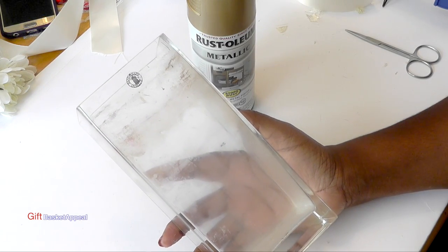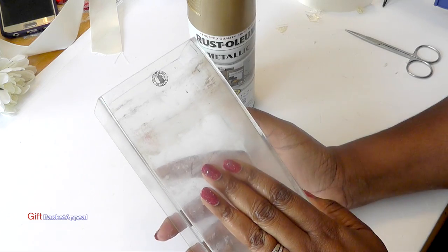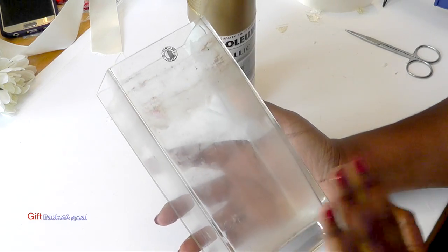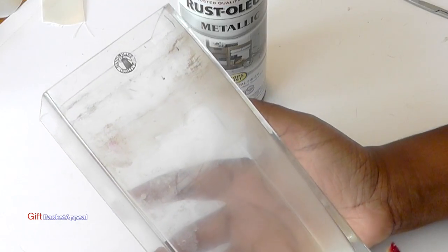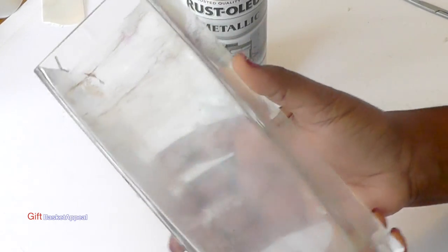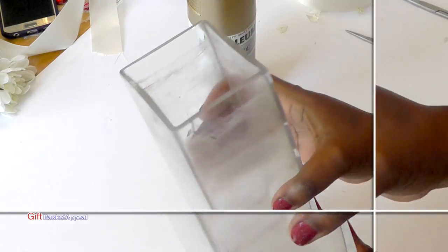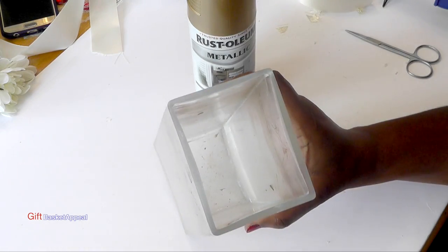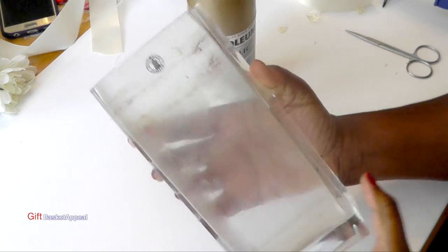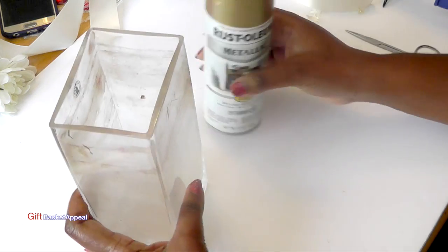Hi, this is Tracy from Gift Basket Appeal, and this vase is an absolute mess. I've had it for a while and it's pretty heavy. I think it's really good quality, it just really needs a good cleanup job. So I'm going to go ahead and wash it, get it cleaned up as much as I can, and then I'm going to use this Rust-Oleum metallic spray paint.